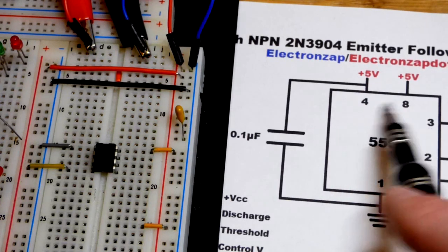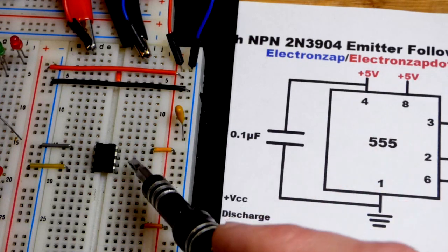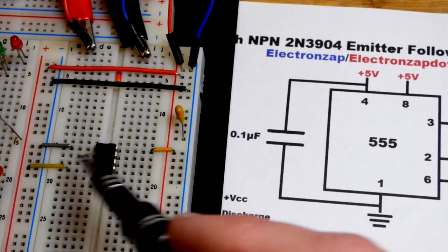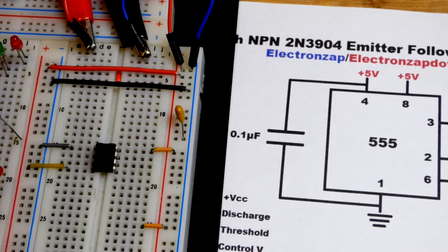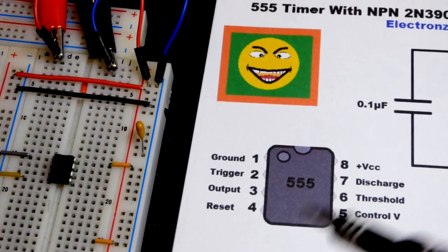I should have put that to pin 8, I should have swapped these numbers, because that's the power pin right there, pin 8. Then pin 1 over here is the ground pin, and that's how we power the 555 timer.